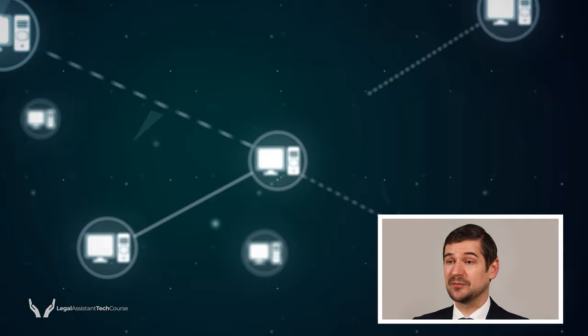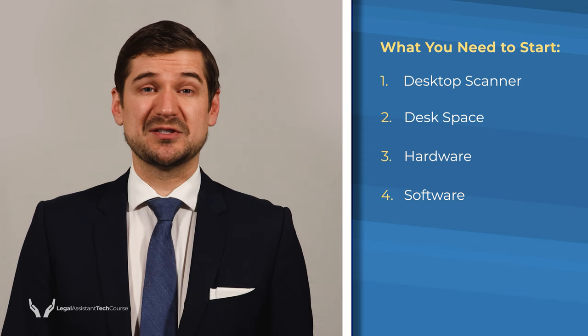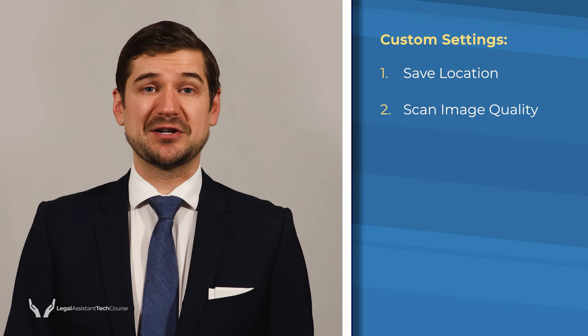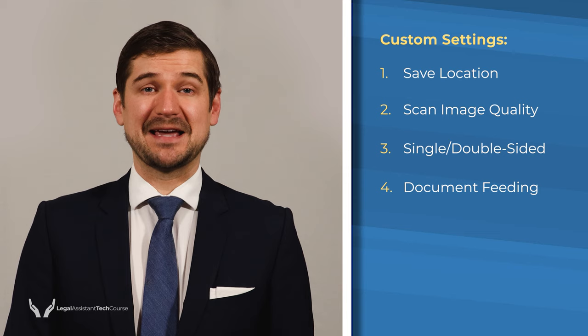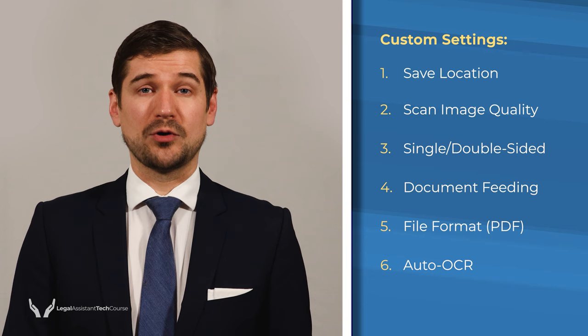You may want to configure your scanner to save documents to a public directory on a network so that other people can access the documents you're scanning. You'll also need computer software — desktop scanners will come with software or it will be available for download on the manufacturer's website. Many different custom settings are available to control things such as the save location, scan image quality, color and compression, whether documents are scanned single or double-sided, the file format (I recommend PDF), whether the scanner will automatically run optical character recognition (OCR) on the document as it's scanned, and whether the scanner automatically detects the size of the paper.